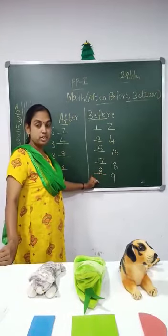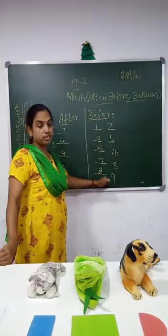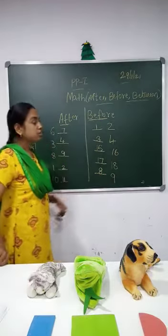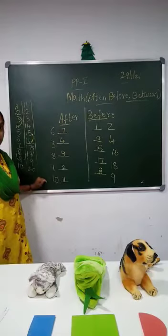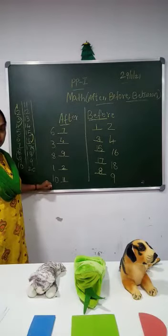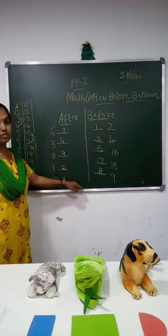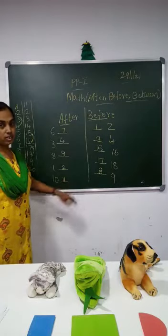So the before number: you will get a dash first and then the number. For the after number, you will get the number first and then a dash.